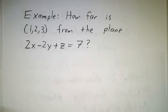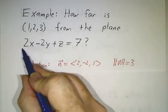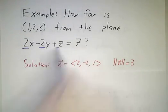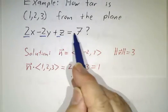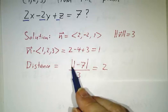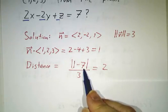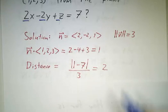For example, if we want the distance from the point (1, 2, 3) to the plane 2x + 2y + z = 7, our normal vector is (2, 2, 1). The length of that normal vector is 3. n dot (1, 2, 3) is the same as plugging (1, 2, 3) into the equation: 2 minus 4 plus 3, which is 1. So our answer is |1 minus 7| divided by 3, which is 6 over 3, so the distance is 2.